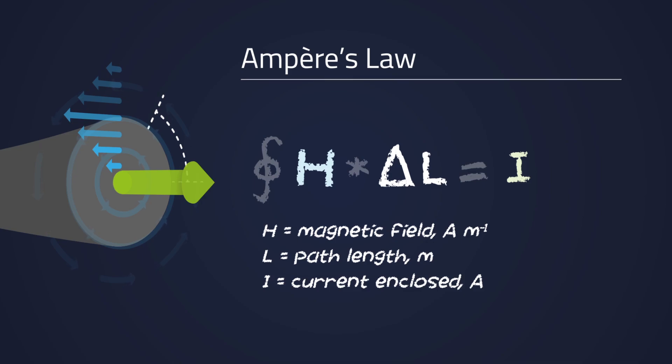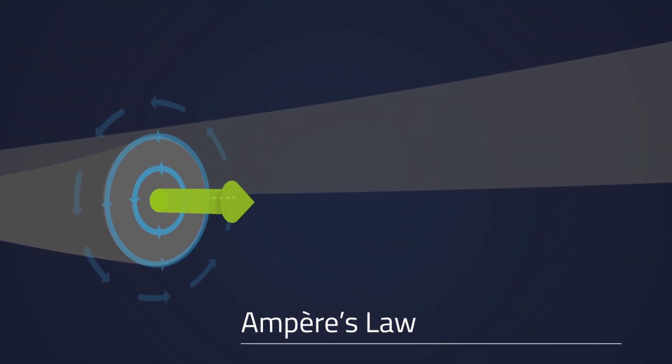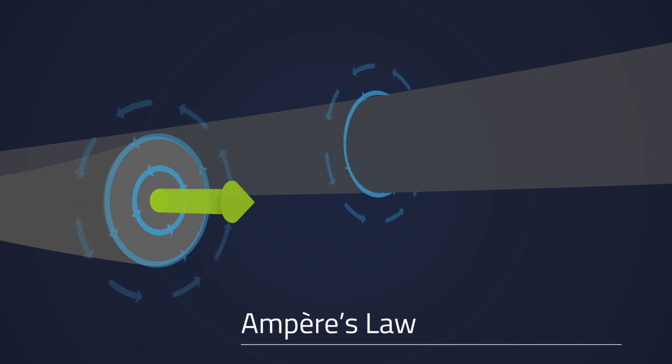The magnetic field lines run in circles around the conductor, and the magnetic field vector points in the direction that a corkscrew makes when it rotates in the direction of the current flow.